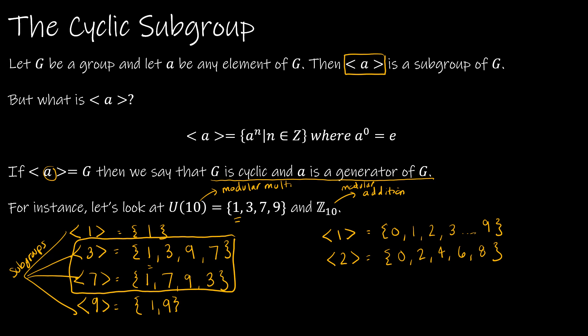Again, both are subgroups, but we only have certain generators. So we didn't go through all of the values in Z(10), but we know at least 1 does generate every value in the set.